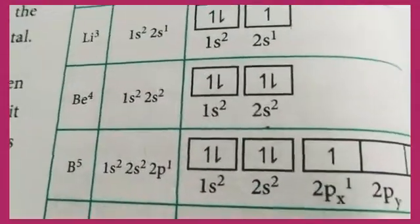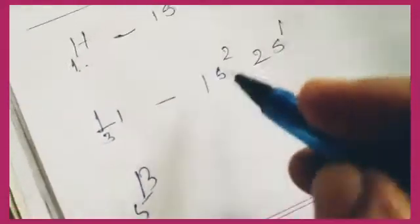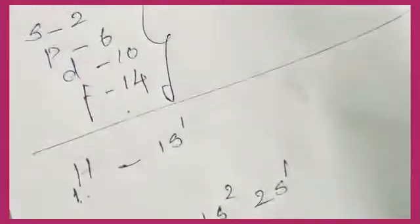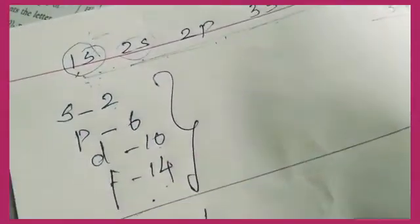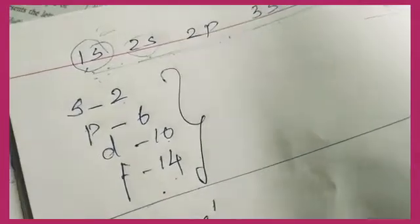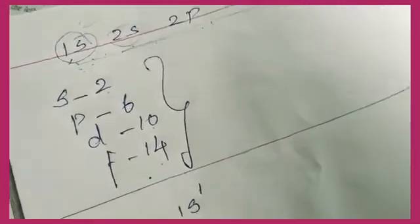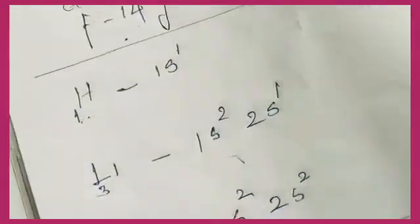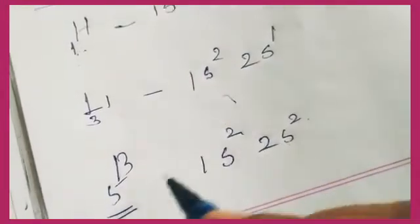Next is boron. The atomic number of boron is 5. The electronic configuration is 1s²2s²2p¹. After filling 1s and 2s with 2 electrons each, the fifth electron goes into the 2p orbital. So we now start filling the 2p subshell.